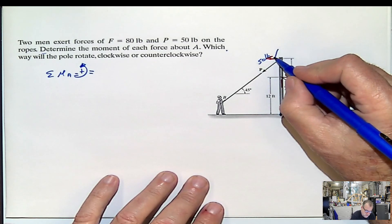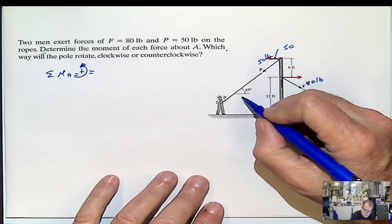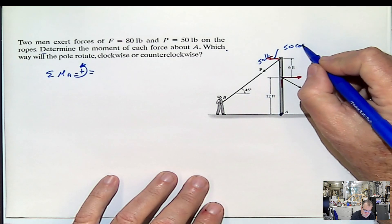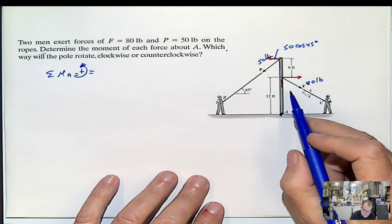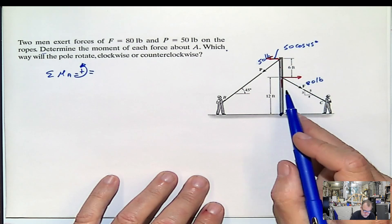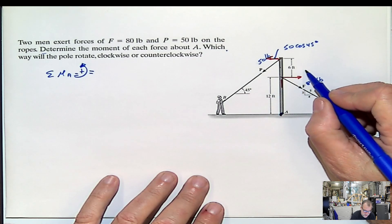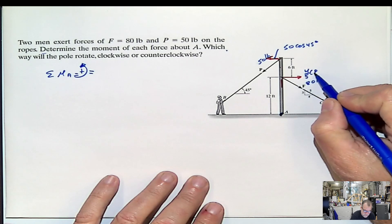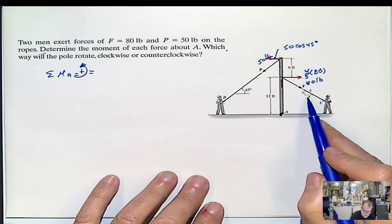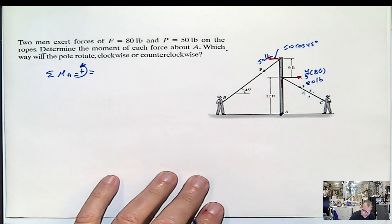This one will be 50 cosine 45 degrees. And this one here, which is the same as in this side, will be 4 fifths multiplied by 80. Remember, it's always the side that is parallel divided by the hypotenuse multiplied by the force.